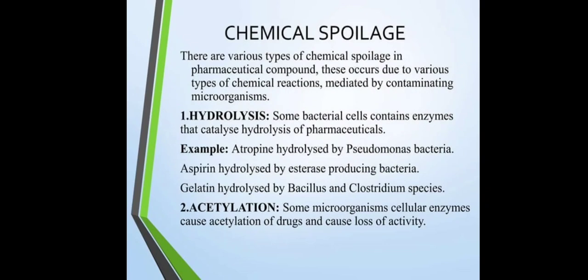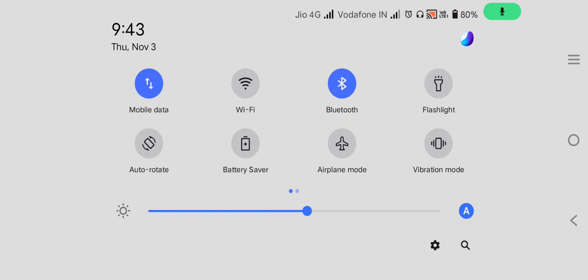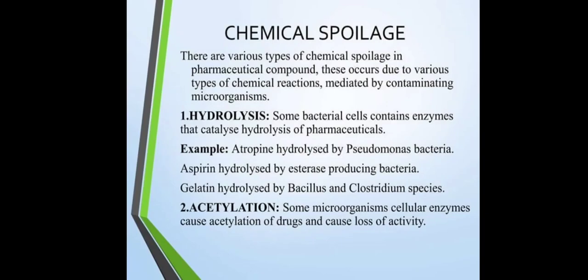Chemical spoilage: there are various types of chemical spoilage in pharmaceutical compounds, occurring due to various chemical reactions generated by contaminated microorganisms. First is hydrolysis: some bacteria contain enzymes that catalyze hydrolysis of pharmaceuticals. For example, atropine hydrolysis by Pseudomonas bacteria, aspirin hydrolysis by esterase-producing bacteria, and gelatin hydrolysis by Bacillus and Clostridium species.